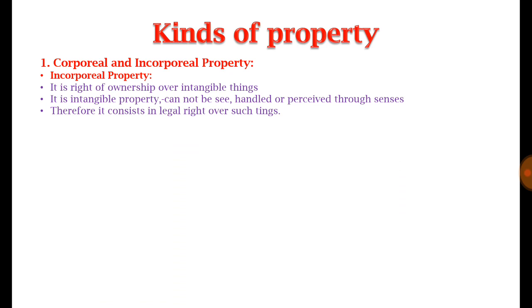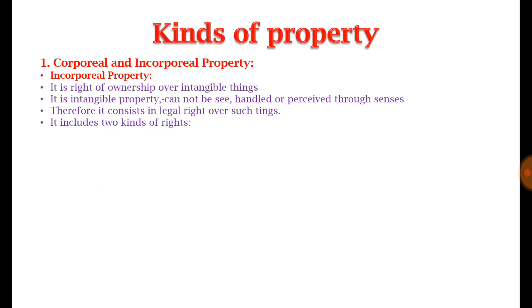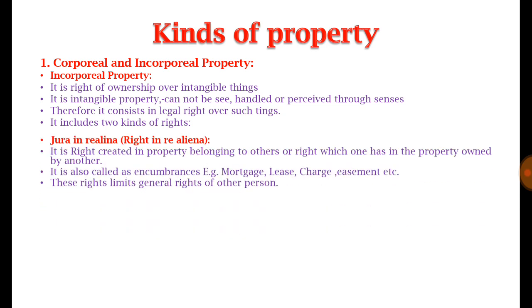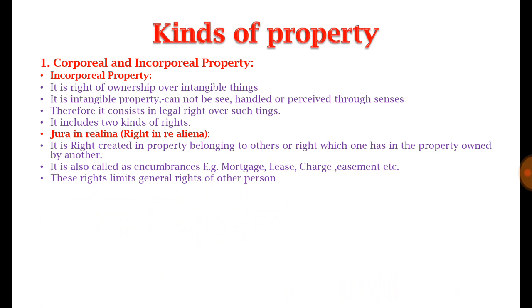The second type of property, differentiated on the basis of corporeality, is incorporeal property. Incorporeal properties are those properties which have no corporeal or material existence. They are available in the form of ownership over intangible rights or things. Intangible property cannot be seen, handled, or perceived by our senses, but must be understood as legal rights recognized by the legal system.